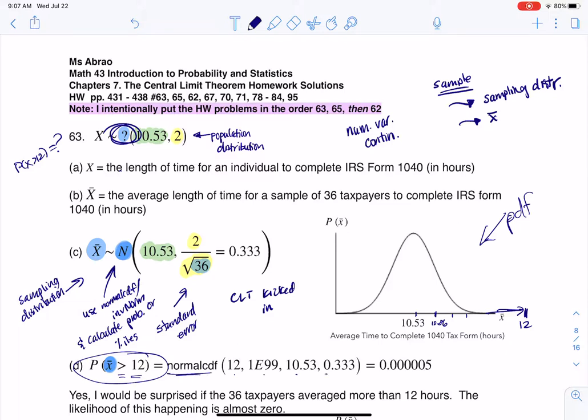Because I'm on the sampling distribution, I can use normal CDF - low, high, mean, standard error - and there's that probability, it's basically zero. So yes, I would be surprised if we looked at our sample of 36 and it took them more than 12 hours to complete their tax forms.